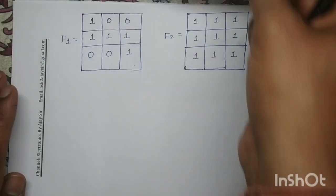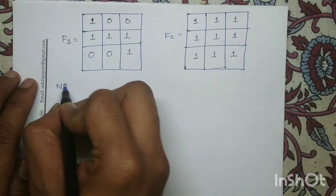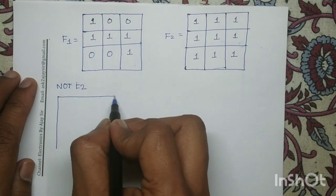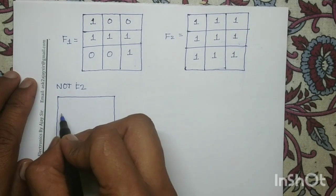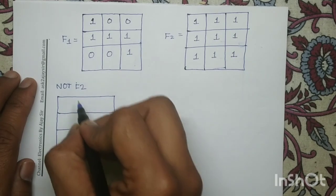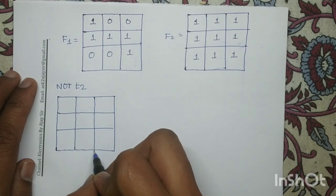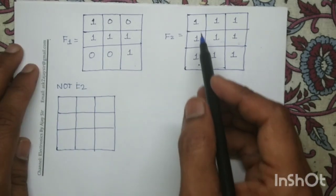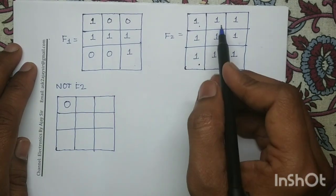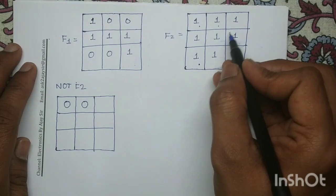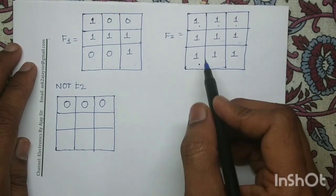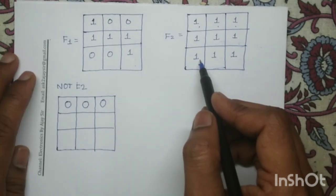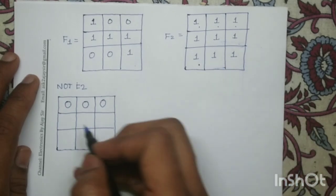Next we will compute NOT of F2, that is the complement of F2. Since the dimension of F2 is 3x3, the dimension of NOT(F2) is also 3x3. We perform the bitwise complement operation on image F2. Since all pixel values in F2 are 1, the complement of each pixel is 0, so all elements in NOT(F2) are 0.